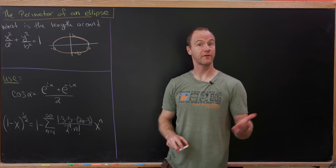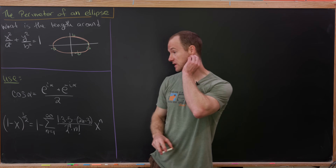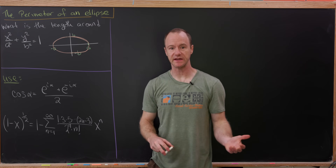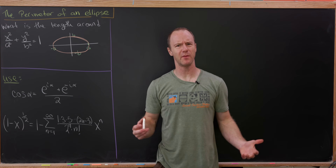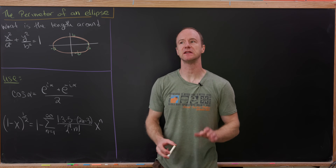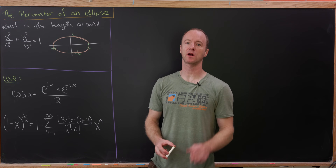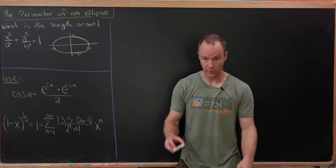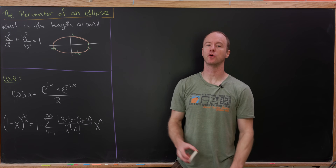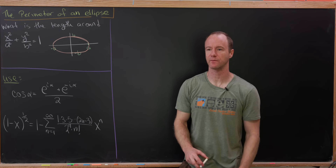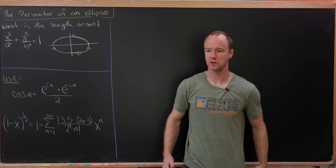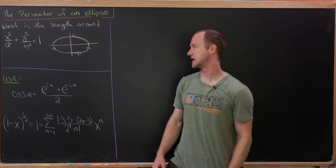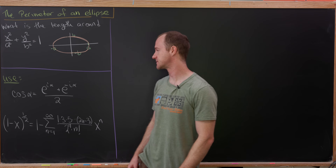Today we're going to find the formula for the perimeter of an ellipse, and what we'll see is that what we come up with is a lot more complicated than the formula for the perimeter or the circumference of a circle, which of course is 2π times the radius.